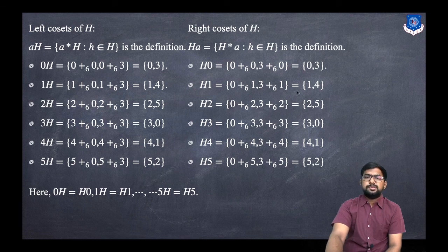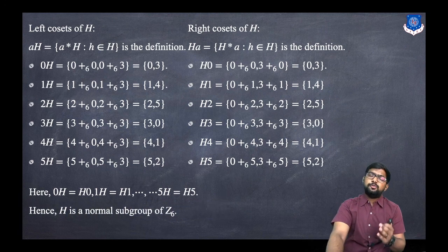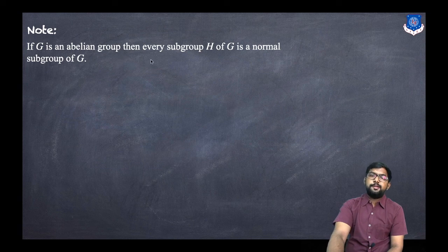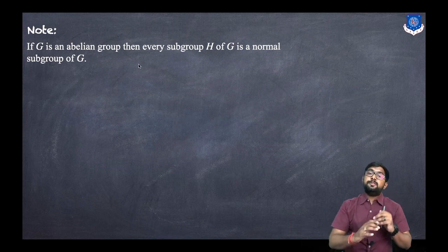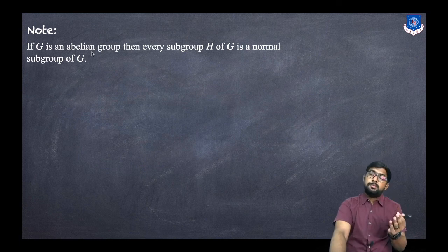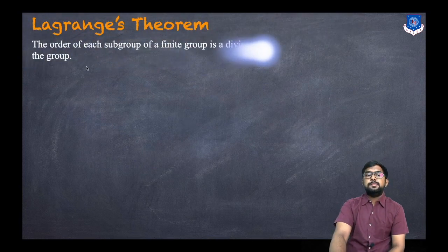As you can see, all the left cosets and right cosets are the same: {0,3}, {1,4}, {2,5} — 0H = H0, 1H = H1, up to 5H = H5. So by the definition of a normal subgroup, H is a normal subgroup of Z6 because the left cosets and right cosets are the same. Note: if G is an abelian group, then every subgroup H of G is a normal subgroup of G, because in an abelian group left and right cosets are always equal.